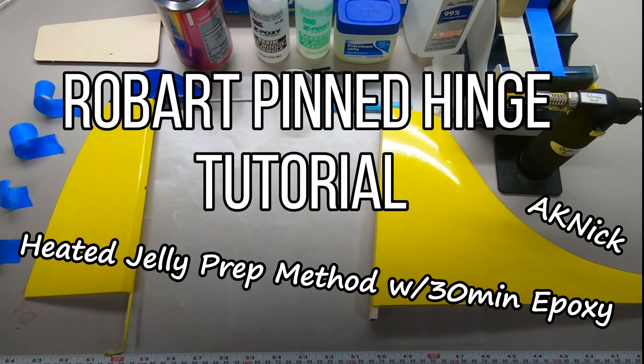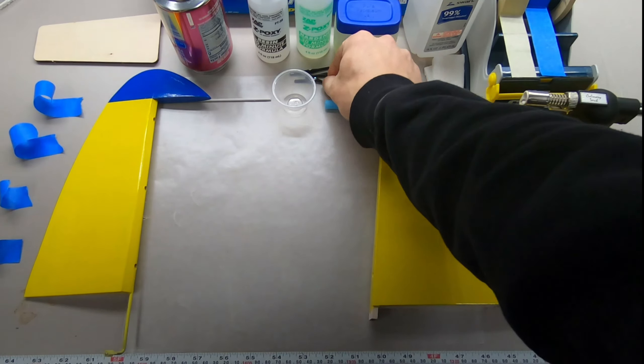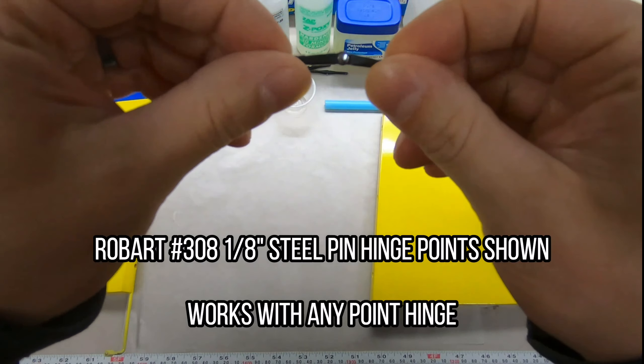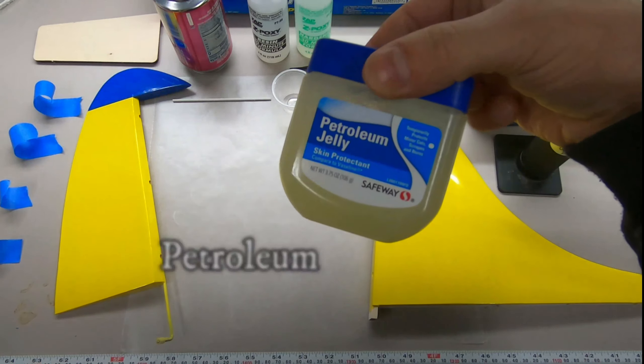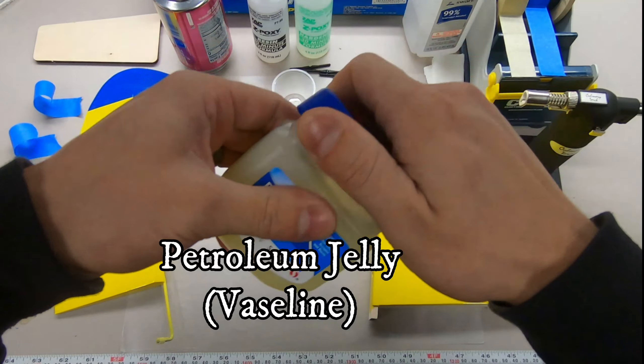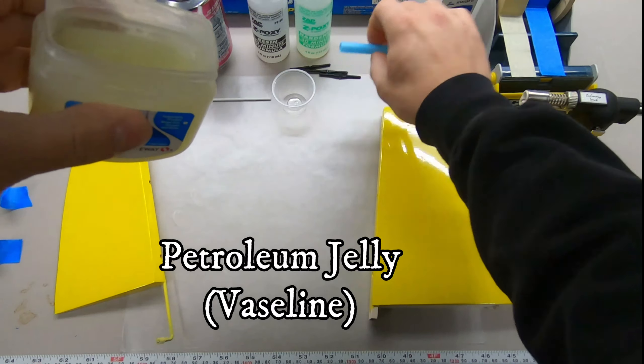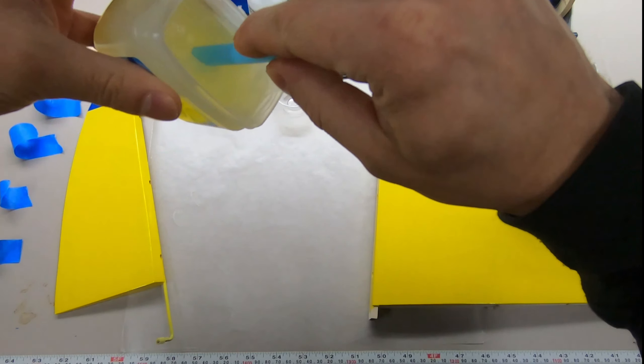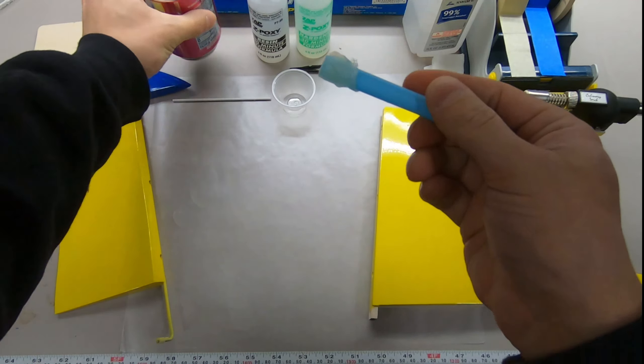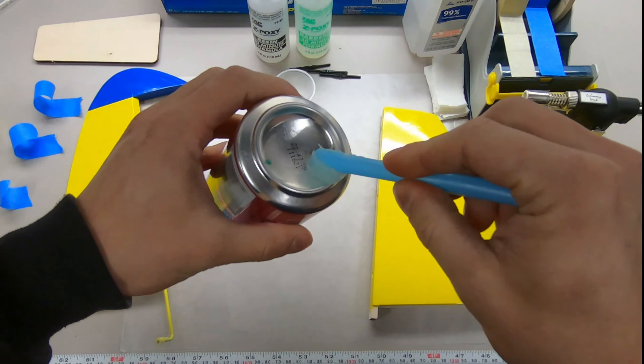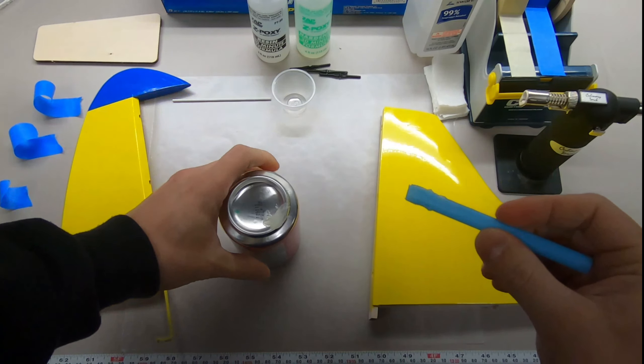All right, today I'm going to show you how to install Robart pinned hinges the way I do it. Get some petroleum jelly and some apparatus to get some numbness out of there. Stick it into a can, any old can.